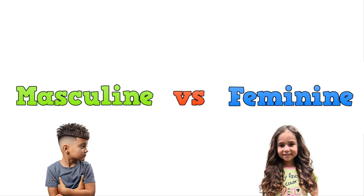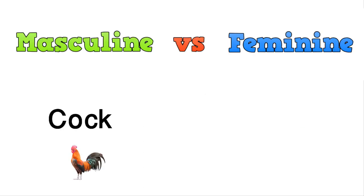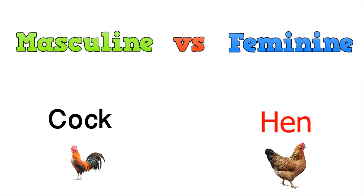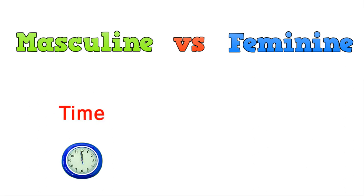In childhood, we learn that boy is masculine and girl is feminine. We speak in Urdu language — for example, cock is masculine and hen is feminine. There are some words that we categorize in Urdu language as masculine and feminine. If we talk about time, we say it in a way that tells us it is masculine gender.